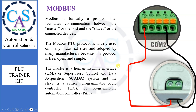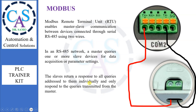Modbus is basically a protocol that facilitates communication between the master or host and the slaves or connected devices. The Modbus RTU protocol is widely used on many industrial sites and adopted by many manufacturers because this protocol is free, open, and simple. The master is a Human Machine Interface, HMI, or Supervisory Control and Data Acquisition, SCADA, system, and the slave is a sensor, Programmable Logic Controller, PLC, or Programmable Automation Controller, PAC. Modbus Remote Terminal Unit, RTU, enables master-slave communication between devices connected through serial RS-485 using two wires. In an RS-485 network, a master queries one or more slave devices for data acquisition or parameter settings. The slaves return a response to all queries addressed to them individually and only respond to queries transmitted from the master.